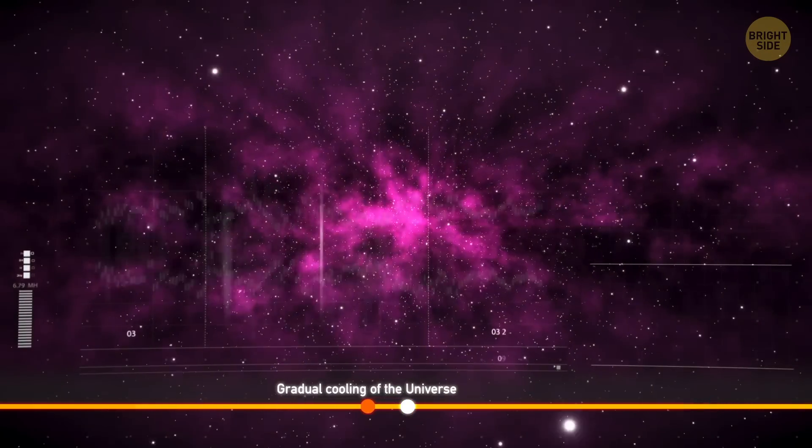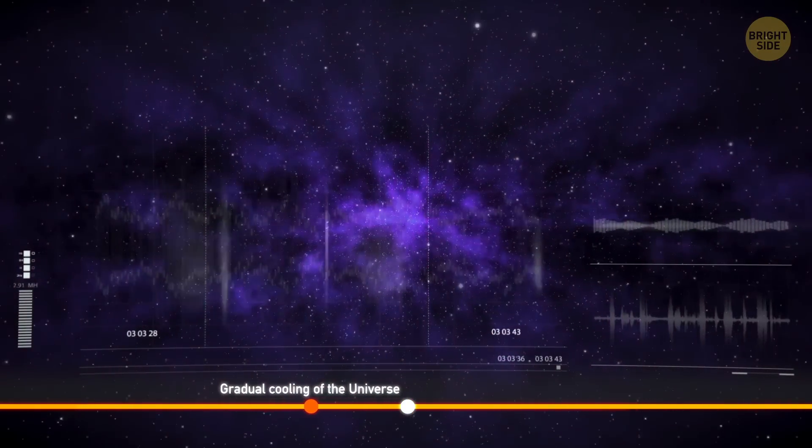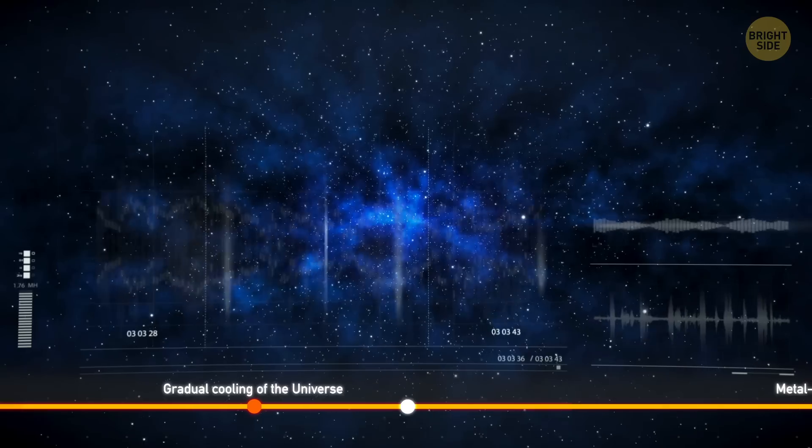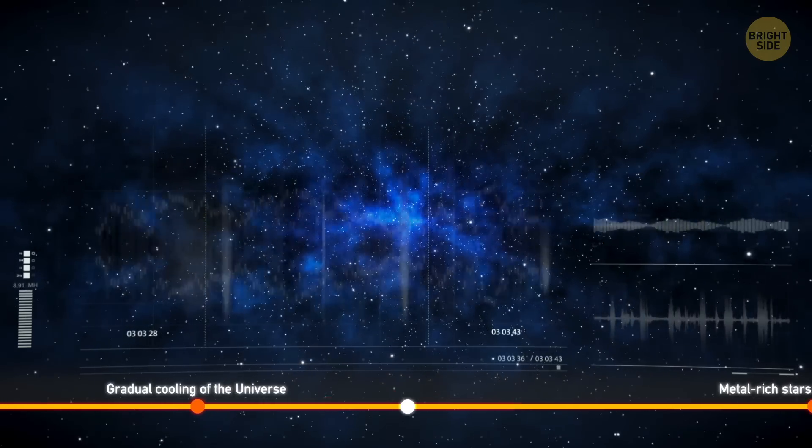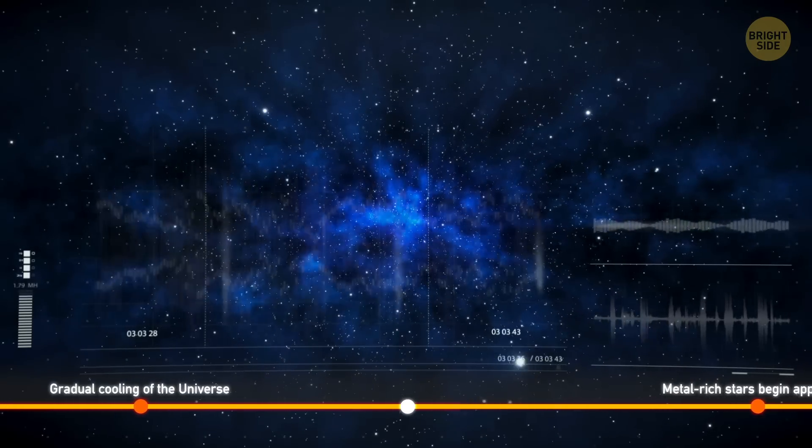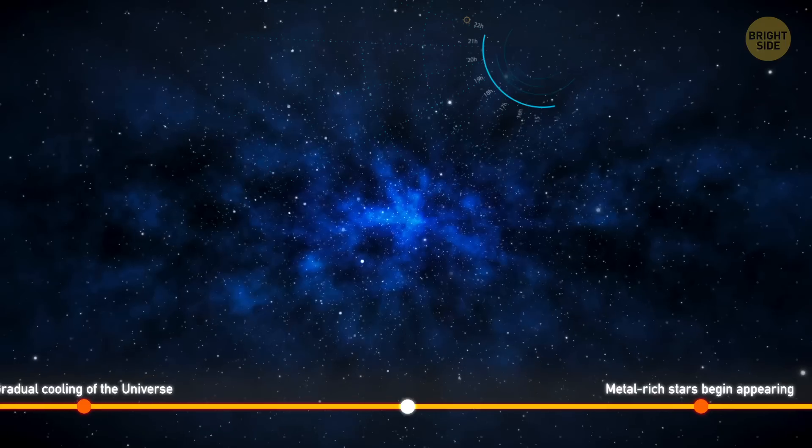At this point, the temperature of the universe slowly began to fall. Until now, it was hotter than the Sun's surface and quite dense. But starting 11 billion years ago, it all changed.